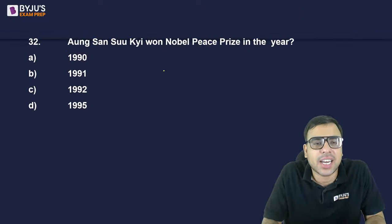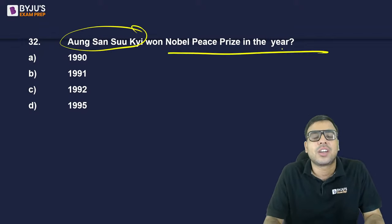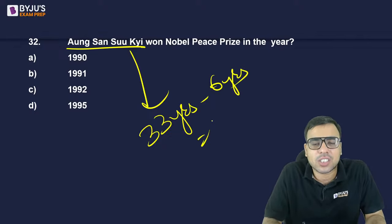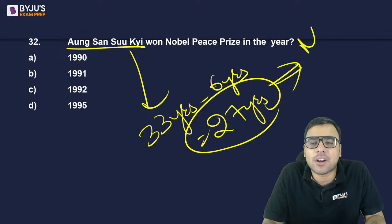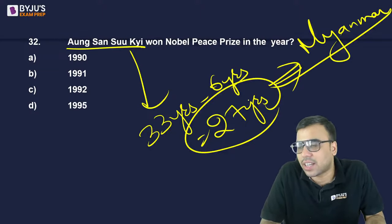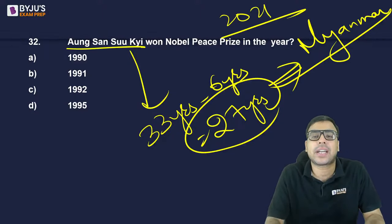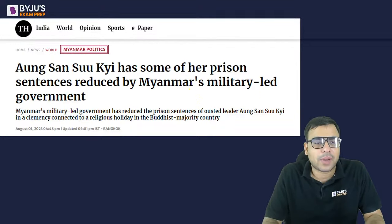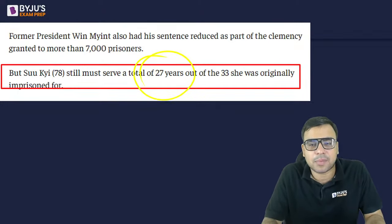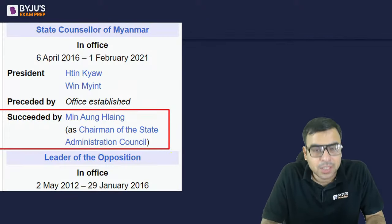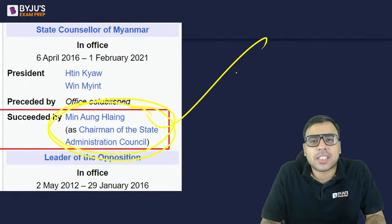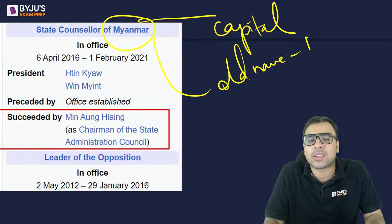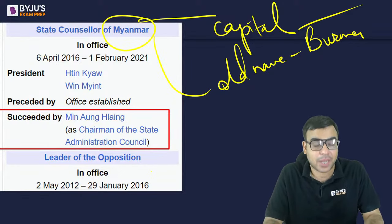Aung San Suu Kyi won the Nobel Peace Prize in which year? 1990, 1991, 1992, or 1995? She is a pro-democracy leader from Myanmar, currently in jail. In 2021, a military coup happened in Myanmar; she was sentenced to 33 years, recently reduced to 27 years. The army chief of Myanmar is Min Aung Hlaing. The right answer is 1991. Also note: Myanmar's old name is Burma. Go find out the capital and currency of Myanmar.